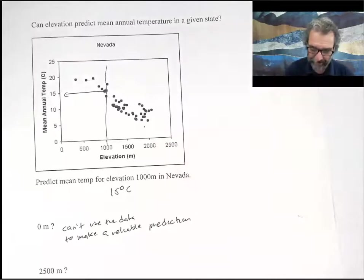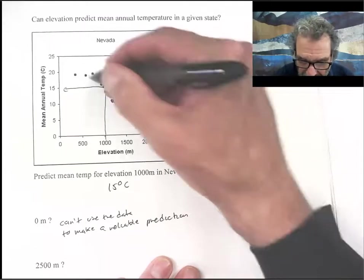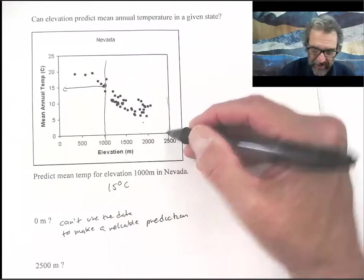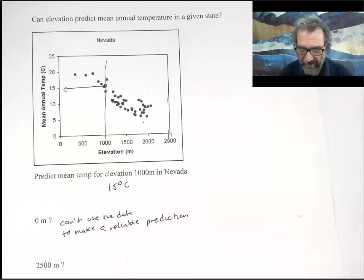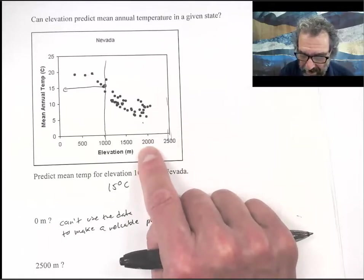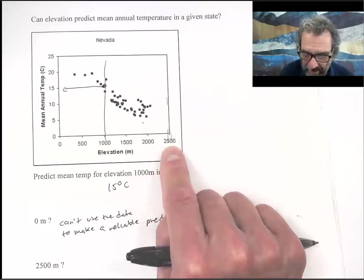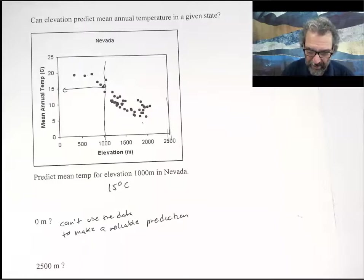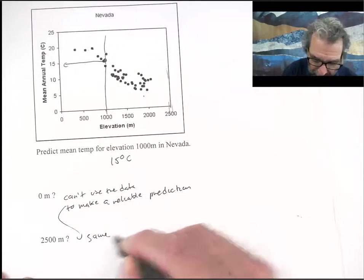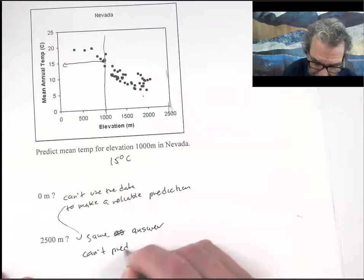And 2500 meters. Same issue. High elevation. This connection of elevation with temperature might not continue up to higher elevations because maybe there's different kinds of plants at higher elevations and maybe it's easier for heat to be retained or reflected. I don't know because I don't see anything here. And chances are in Nevada there's nothing much above 2000 meters. Maybe there's nothing like 2500 meters. So there are no such things. But if there were what do you think a temperature would be? Same problem. Same answer. Can't predict reliably.